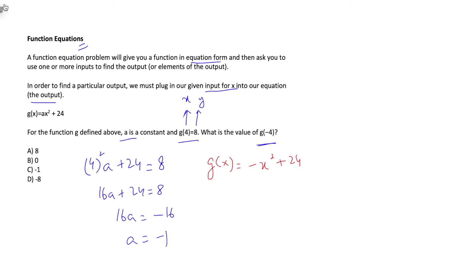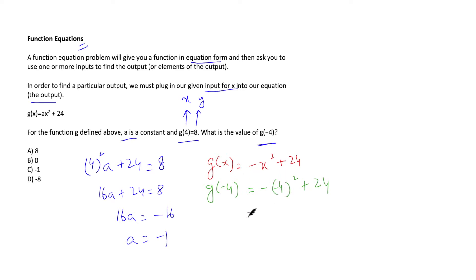Now I calculate g(−4) by replacing x with −4: −(−4)² + 24. Be careful with the sign — the negative sign belongs to the equation. (−4)² = 16, so we get −16 + 24 = 8. This is our answer, which is option choice A.